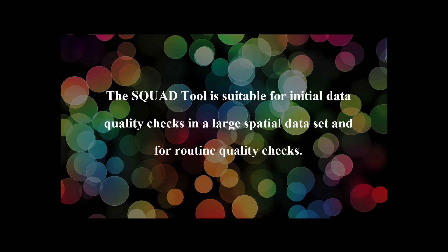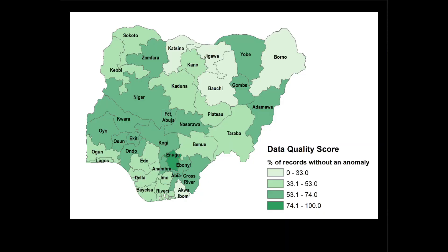This tool is suitable for initial data quality checks in a large spatial data set and also for routine data quality checks. We worked specifically with Nigeria recently because they put their master facility list online. They have 37 different states — it's the most populous country in Africa — and they needed to first assess the scope of problems with their master facility list. We helped them come up with a data quality score based on the number of anomalies showing up for each state. They held a big training session with people from all 37 states, and they're now running the tool on a quarterly basis to see what facilities pop up as having problems.